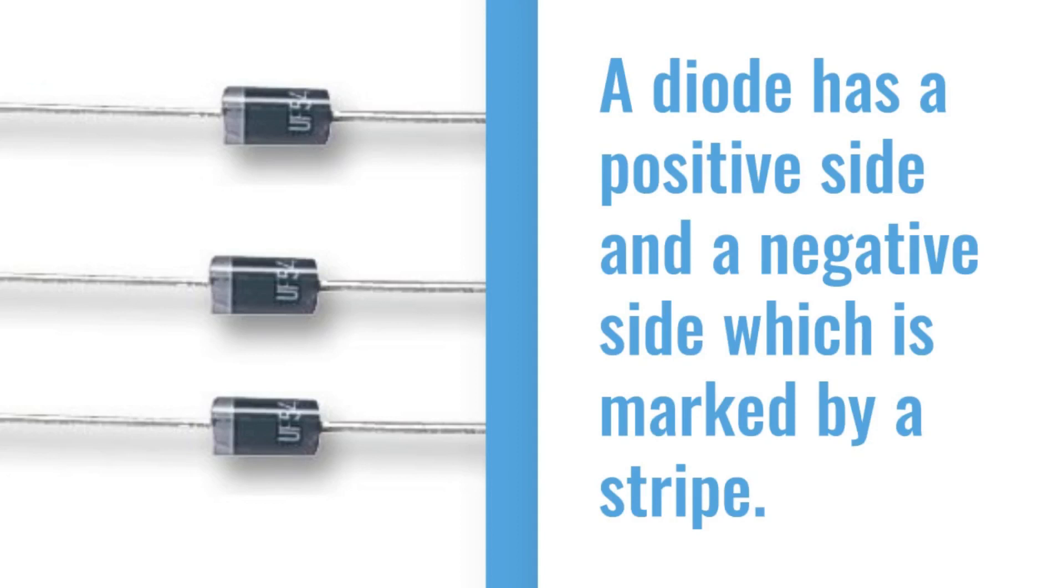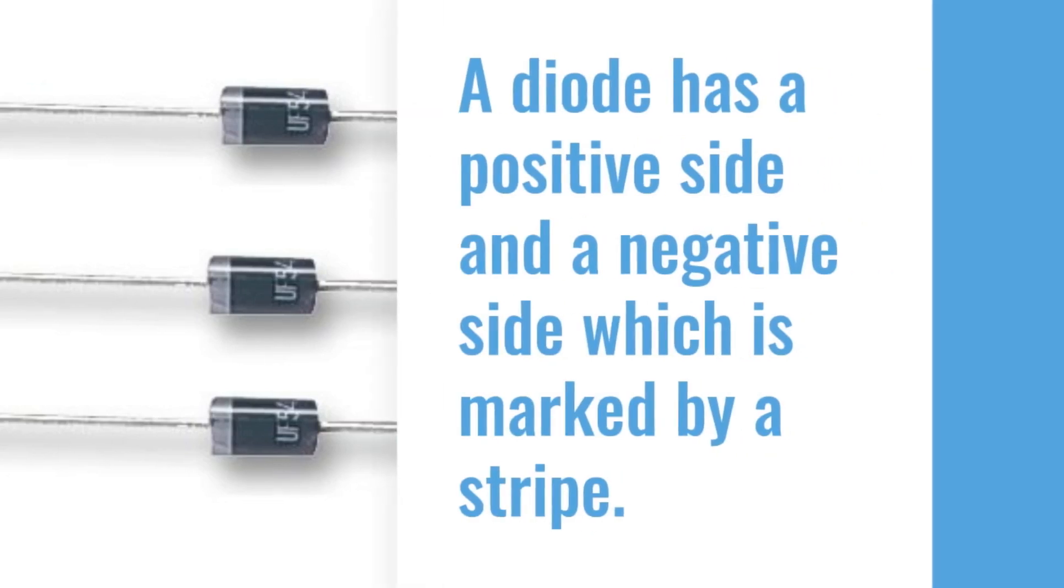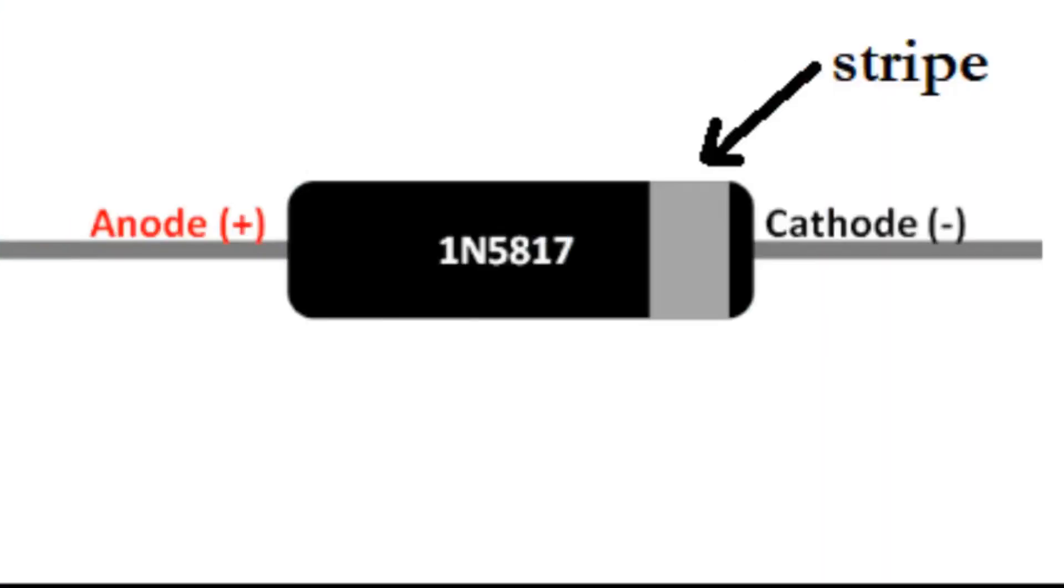From our previous tutorial on diodes, we learnt that a diode has a positive side and a negative side which is marked by a stripe. We said that the positive side is called an anode while the negative side is called a cathode.